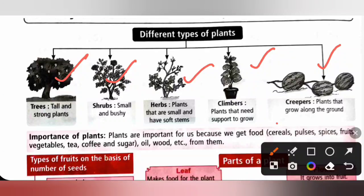So plants are important for us because we get food like cereals, pulses, spices, fruits, vegetables, tea, coffee, sugar, oil, wood etc. from them.